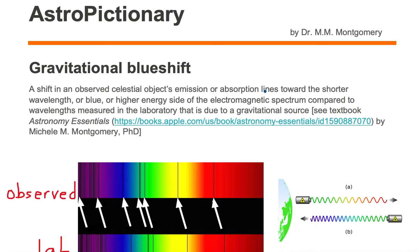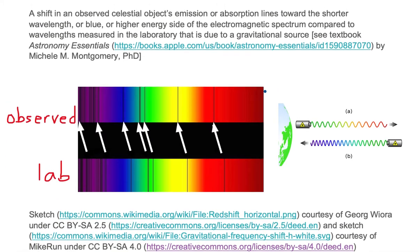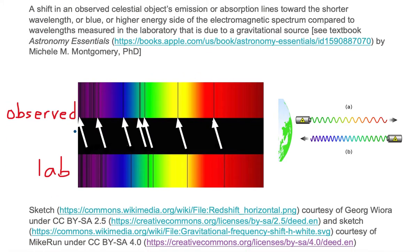Let's take a look at an example of gravitational blueshift. In this image on the left, we have an observed spectrum on the top, and on the bottom we have a laboratory spectrum.